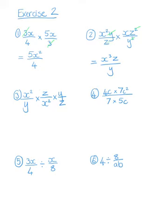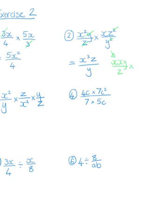So z squared and z cancel with each other. Just to remind you of why we can do that — it's because if we write things in expanded notation, we can see that x squared y is the same as xxy, and xz squared is the same as xzz over yy. So we cancel one of the y's with one of the y's, and one of the z's with one of the z's.